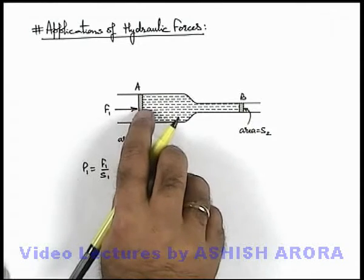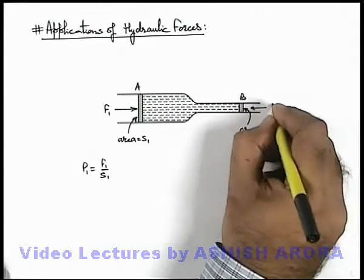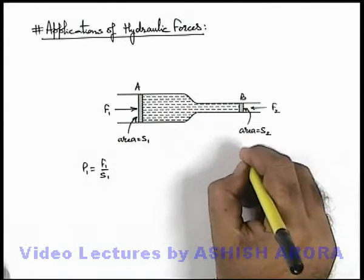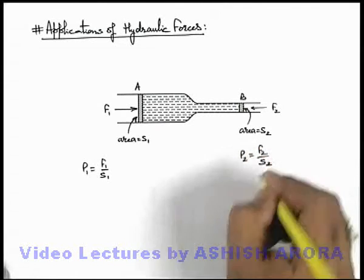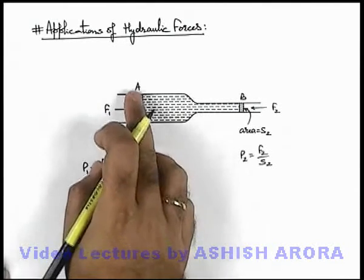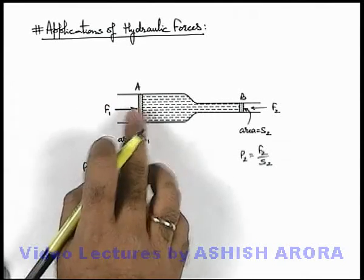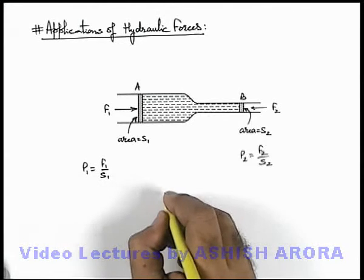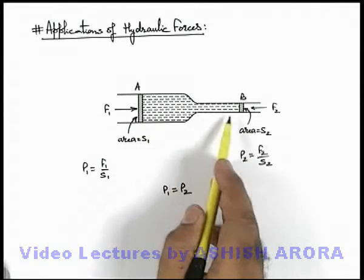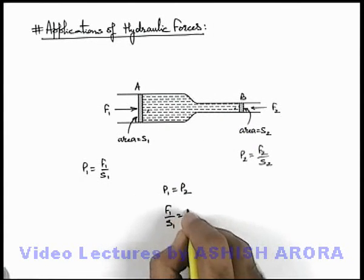On the other side, due to this pressure the fluid will have a tendency to move toward the right. To keep it at rest we need to apply a force F2, such that the same pressure will be applied on the fluid. So pressure P2 can be written as F2 divided by S2. Now, since the fluid is horizontal, there is no change in pressure from left to right. So P1 must equal P2, which gives us F1 divided by S1 equals F2 divided by S2.